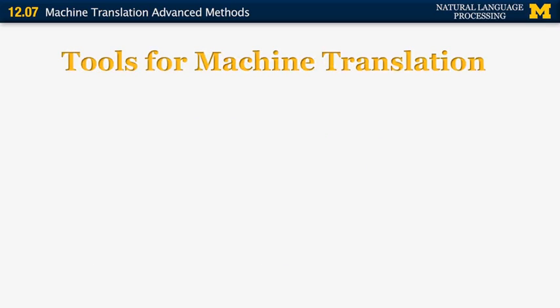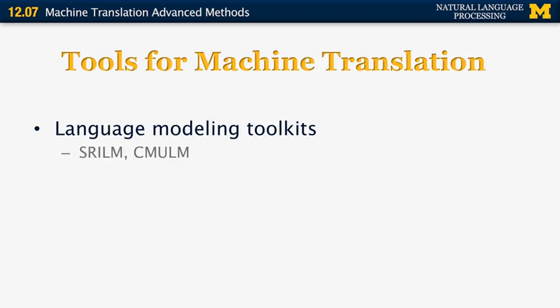So I'm going to conclude the section on machine translation by giving us some pointers for tools, for projects and for assignments. The first one is a language modeling toolkits. There are many available. I would recommend the SRI and the CMU Cambridge language modeling toolkits, which are both available for research purposes on the internet.